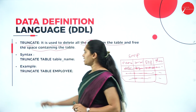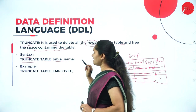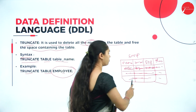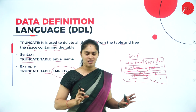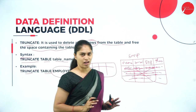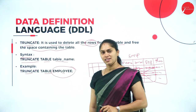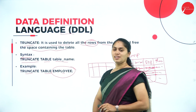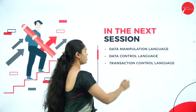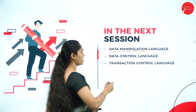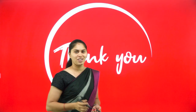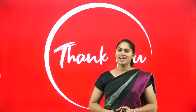The syntax for TRUNCATE is: TRUNCATE TABLE table_name. For example, TRUNCATE TABLE employee — whatever data was in the employee table, every row's data gets erased, leaving a blank table with no data. This is how the TRUNCATE command works under Data Definition Language. I hope you all understood DDL. In our coming session, we will see DML (Data Manipulation Language), DCL (Data Control Language) and TCL (Transaction Control Language). Until then, keep learning, keep on growing. Thank you.